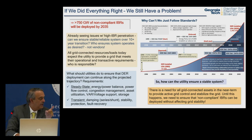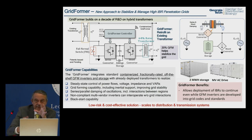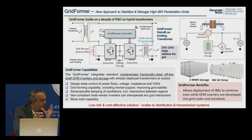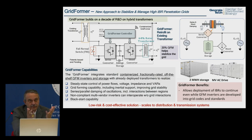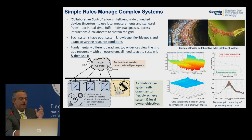We've proposed attaching existing medium-voltage converters and drives to existing transformers to create what we call a grid former — providing grid-forming capability on the grid with series and shunt damping to stabilize the system. This is an example of a lower-risk, cost-effective solution that can scale to both distribution and transmission levels.